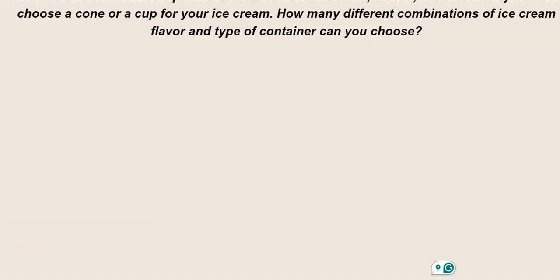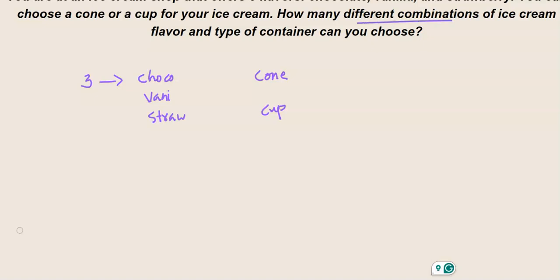Let me explain this concept with the help of two or three problems. The first problem is: you are at an ice cream shop that offers three flavors of ice cream — chocolate, vanilla, and strawberry. You have two options for your container: either a cone or a cup.